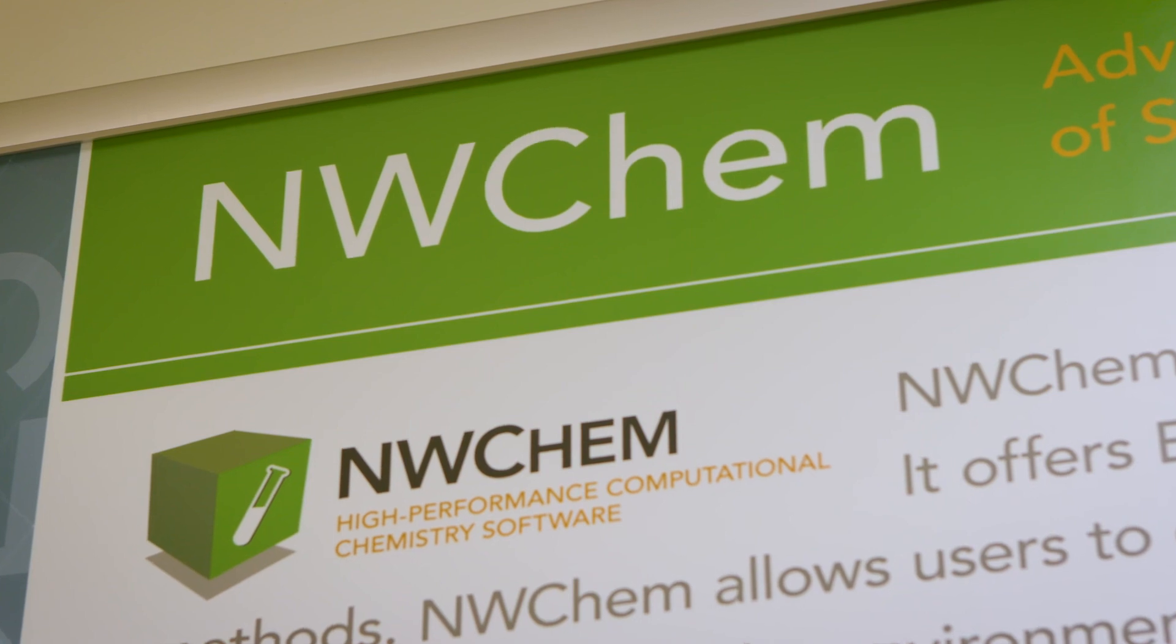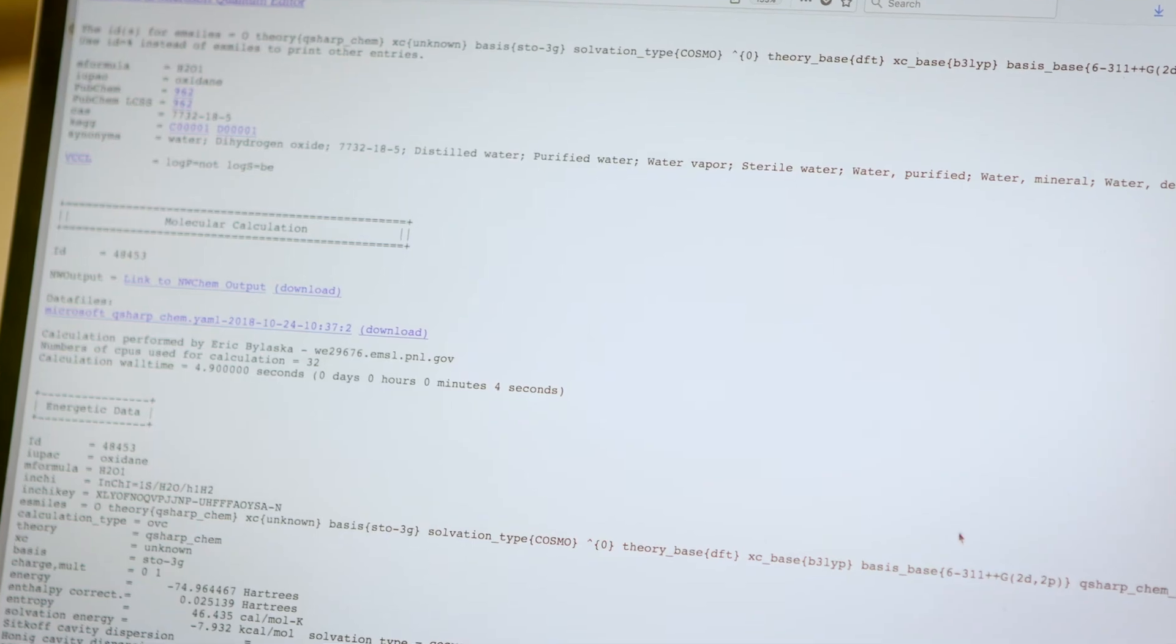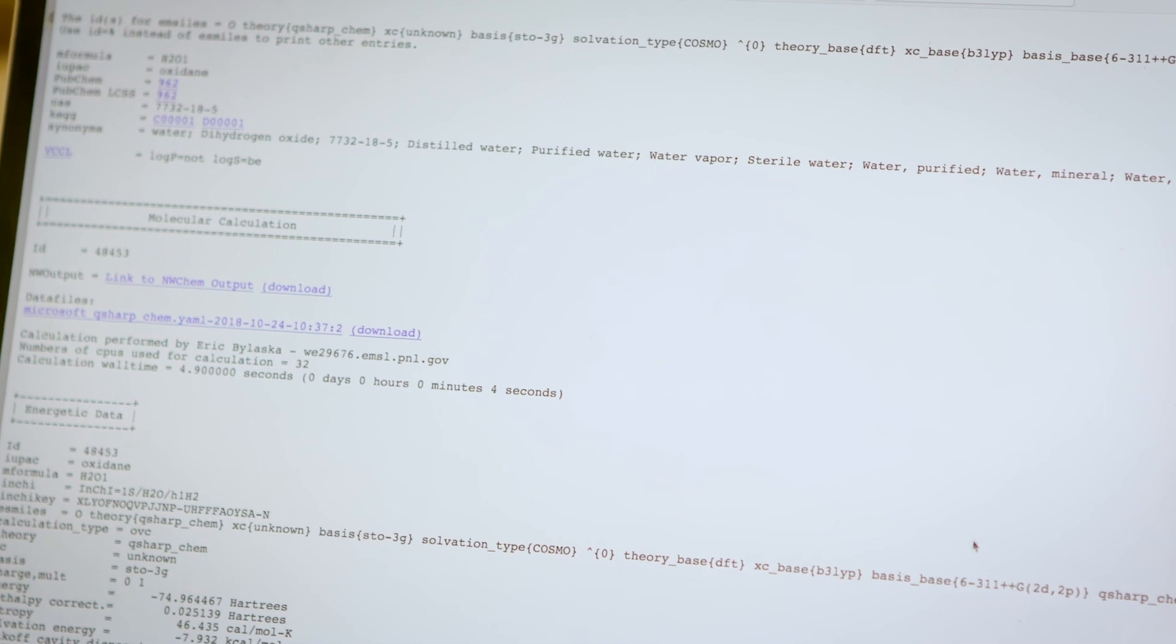NWChem is the flagship Department of Energy computational chemistry code that's being used to analyze molecular electronic structures in various forms in both chemistry and in material science.